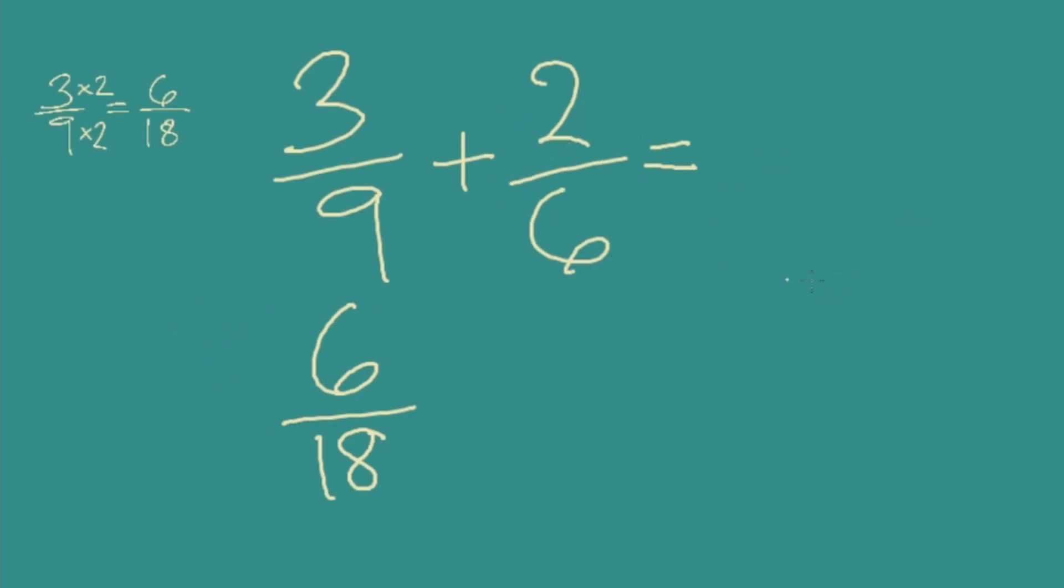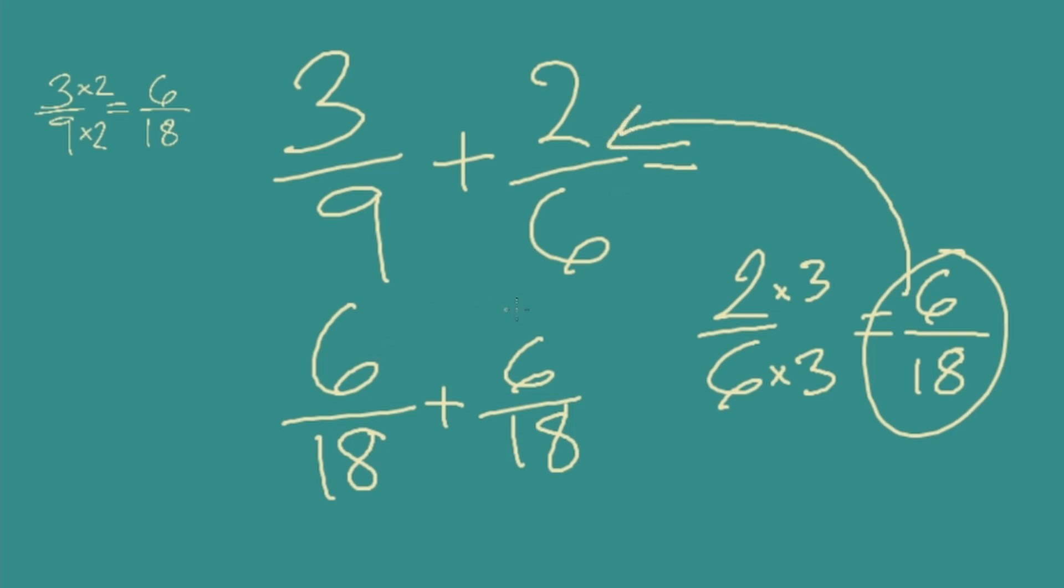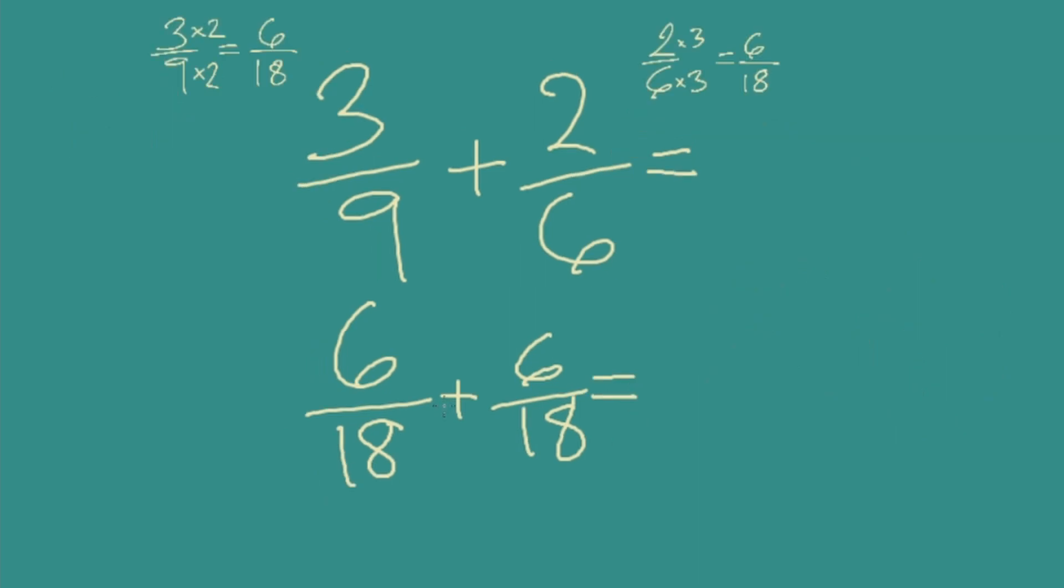Now we do the same for 2/6. We need an equivalent fraction with a denominator of 18. Well, if I start at 6, how could I get to 18? Or how many 6s are in 18? Three. But what we do to the bottom, we do to the top. 2 times 3 is 6. 6/18. So 6/18 is an equivalent fraction for 2/6 that we can plug into our equation. Now that all of our fractions have the same denominator, we can add normally. 6/18 plus 6/18 is 12/18.